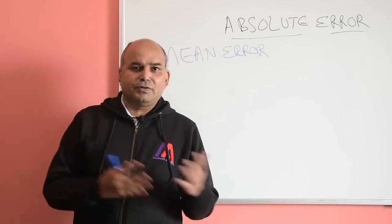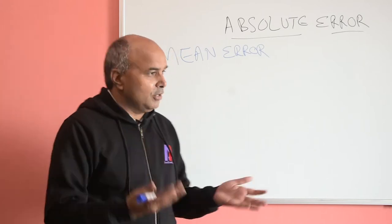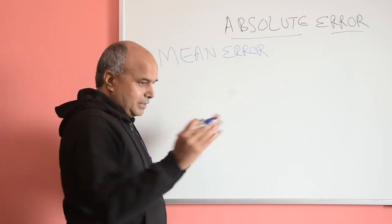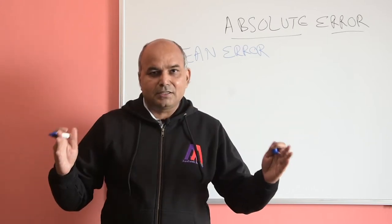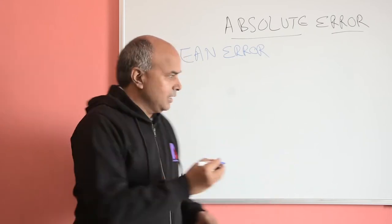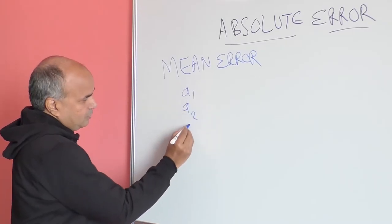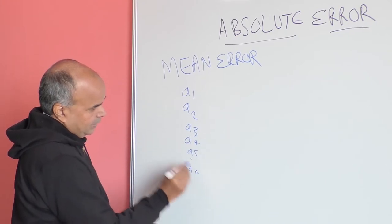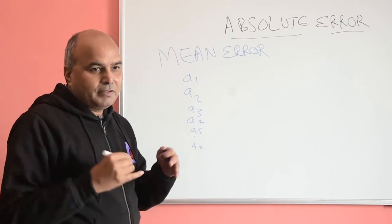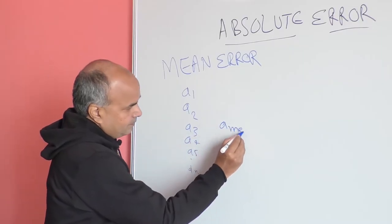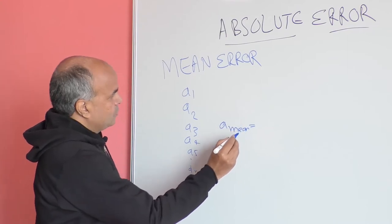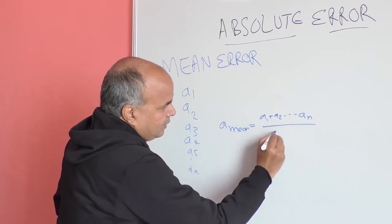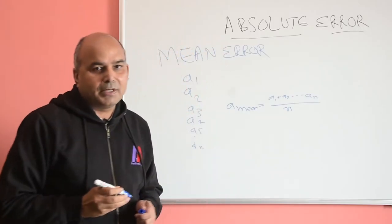To understand absolute error, we should first know what is the mean value. Suppose we measure a certain dimension multiple times and we find the readings as a1, a2, a3, a4, a5, and so on up to an. The mean value is calculated as a_mean = (a1 + a2 + ... + an) / n.